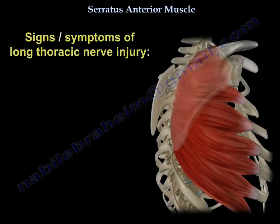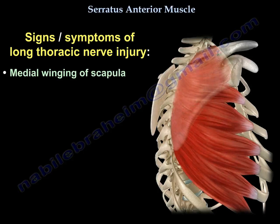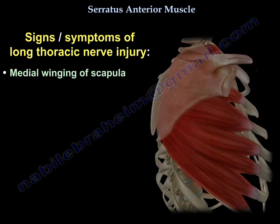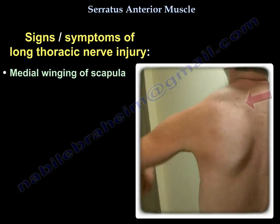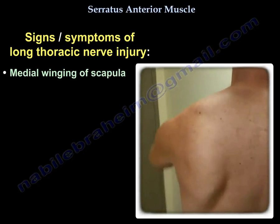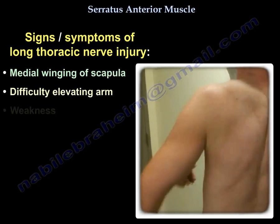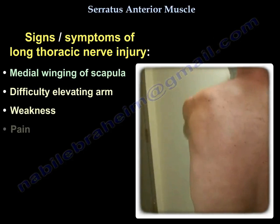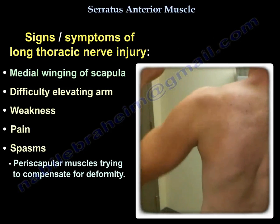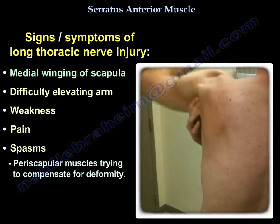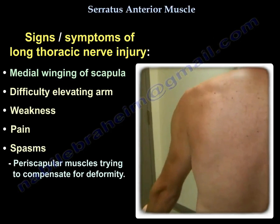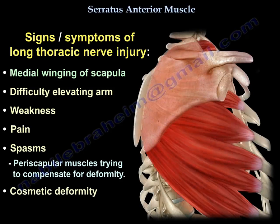The signs and symptoms of long thoracic nerve injury include medial winging of the scapula, difficulty in elevating the arm, weakness, pain, and spasms from periscapular muscles trying to compensate for the deformity. The winging can also cause a cosmetic deformity.